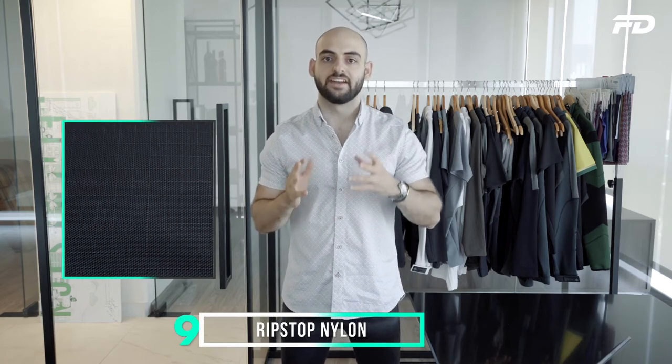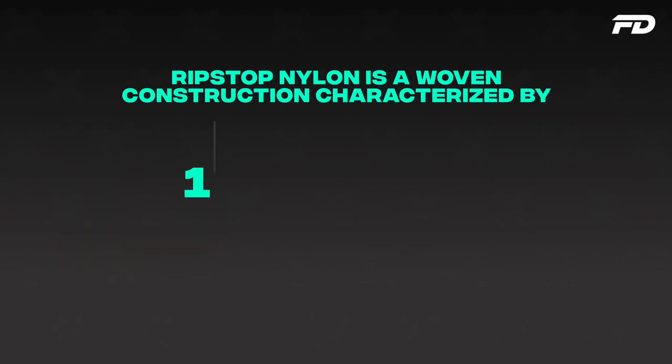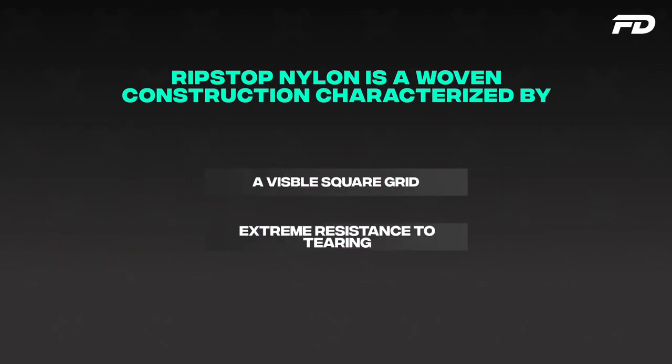A woven nylon material that needs no introduction for those aware of technical garments is ripstop nylon. It's a woven construction characterized by a very visible square grid on the surface of the fabric. The reason it's called ripstop is that it's extremely resistant to tearing. Ripstop nylon is an extremely durable fabric material that is going to hold up over time. It's reserved for more technical items, can be a higher-end material that costs a little more, but gives your garment a much more refined and slick finish.